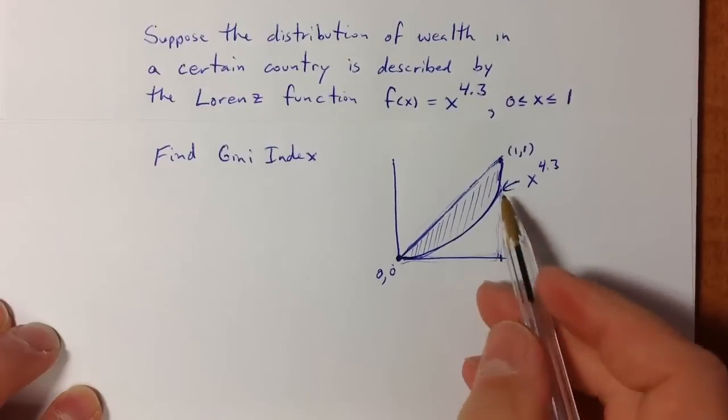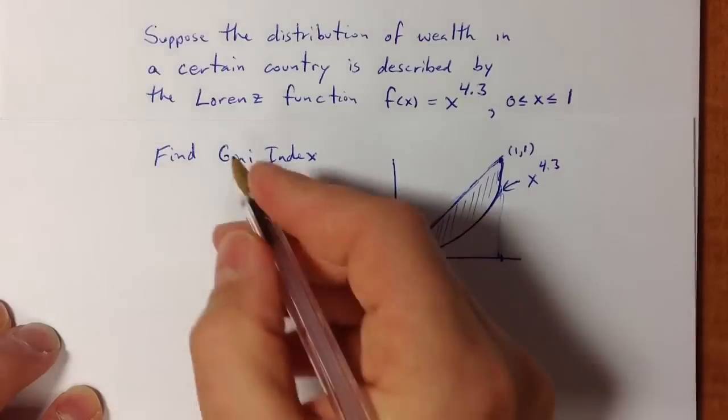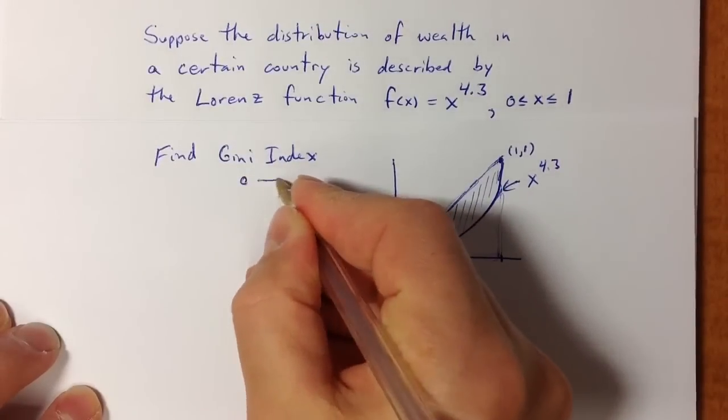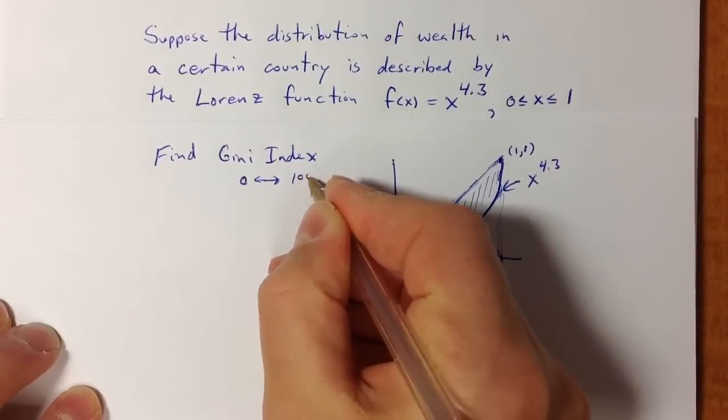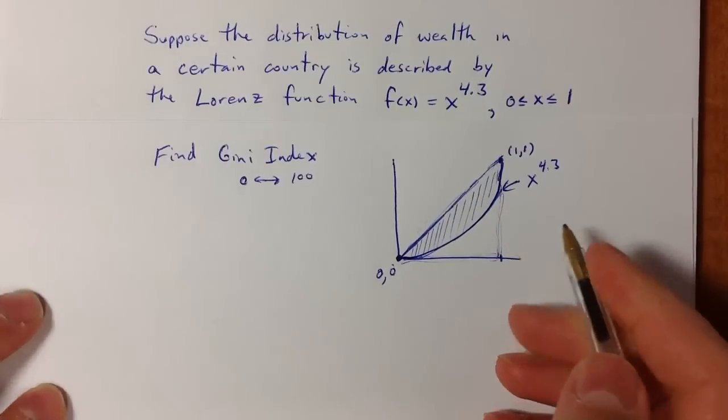So with that in mind, the maximum area could be one-half. To get a nice Gini index number that falls between 0 and 100, we take that number and multiply by 200. This gives us an expression for the Gini index.